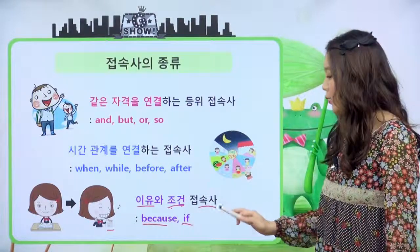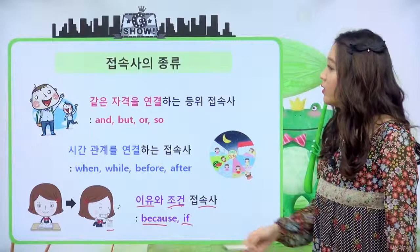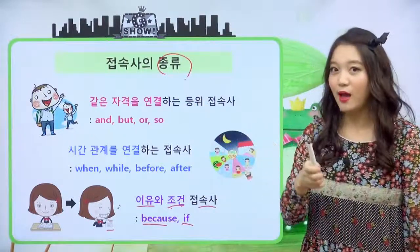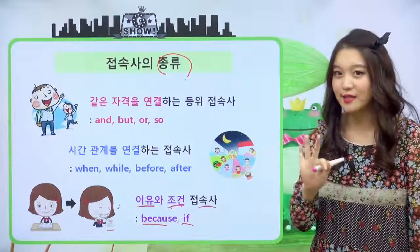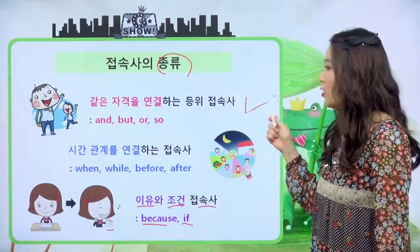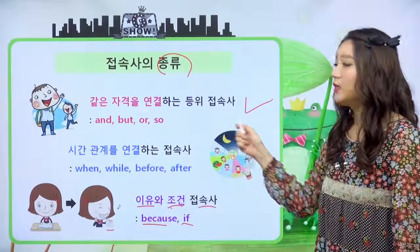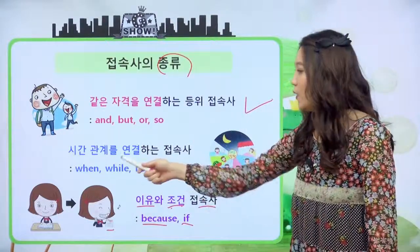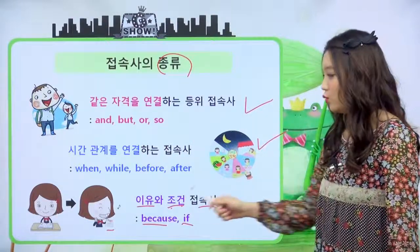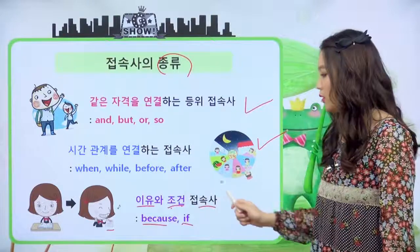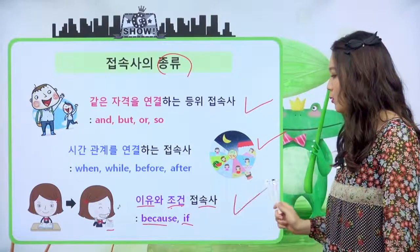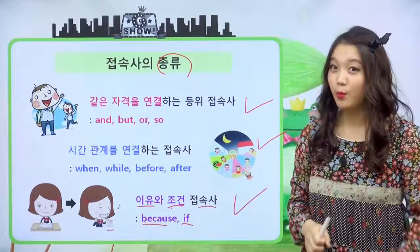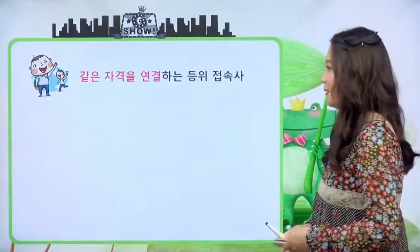그 자세한 뜻과 내용은 천천히 살펴보도록 해요. 접속사의 종류는 총 세 가지다. 같은 자격을 연결하는 등위 접속사, 시간 관계를 연결하는 접속사, 이유와 조건을 연결하는 접속사, 이 세 가지를 오늘 공부해보도록 하겠습니다.